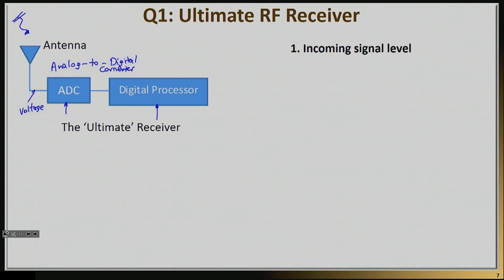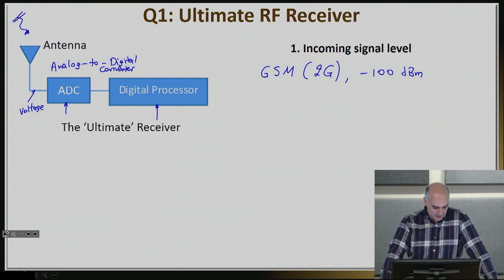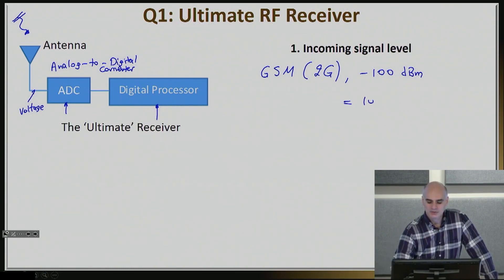The first thing to think about is the incoming signal level — what signal level will this antenna actually receive? It varies depending on how far away you are from the broadcasting system and what standard you're using. For a GSM standard, a 2G standard created a few decades ago, the signal level we can expect to receive is in the order of negative 100 dBm, which is basically equal to 10 to the negative 10 milliwatts.